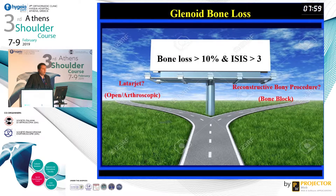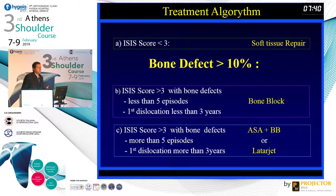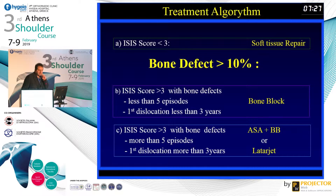What to do in cases of glenoid bone loss — there is no consensus. This is my treatment algorithm: when there is truly minimal bone loss and the ISIS score is less than three, soft tissue repair is good. When it is higher, soft tissue alone is not sufficient. There is a clear black-and-white boundary, but there is a huge gray area where you need to address the bone defect while still reconstructing the capsule and ligaments.